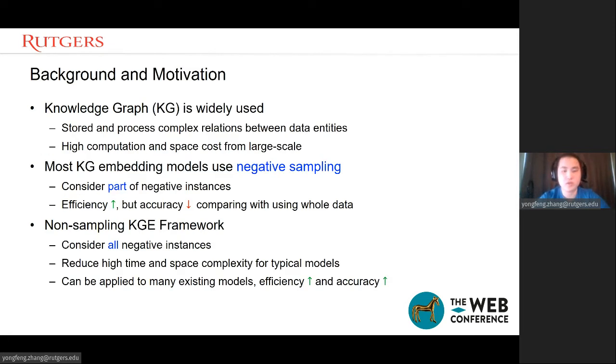Knowledge graph is widely used in recommendation systems and web search. Knowledge graph can store and process complex relations between data entities. We can see entities as nodes and relations connecting entities as edges. However, knowledge graph suffer from high computation and space cost from large-scale data sets. Even though the data is very large, the number of connections or edges is very small.